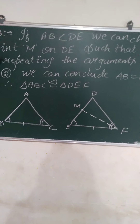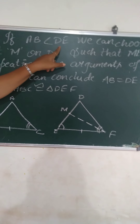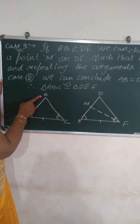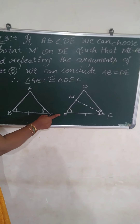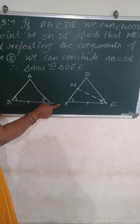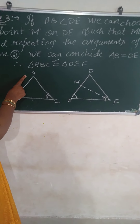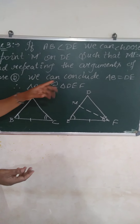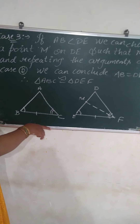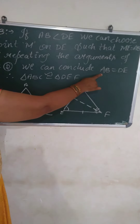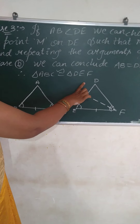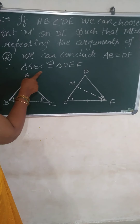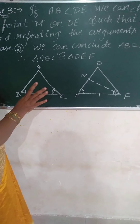In case 3, if AB is less than DE — in case 2 we assumed AB was greater than DE, now in case 3 I assume AB is less than DE. I will take a point M on DE such that ME is equal to AB. I will then repeat the same arguments as in case 2, and conclude that AB is equal to DE and M coincides with D. Therefore triangle ABC is congruent to triangle DEF by ASA congruence.